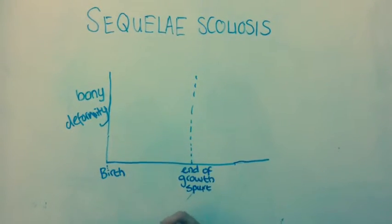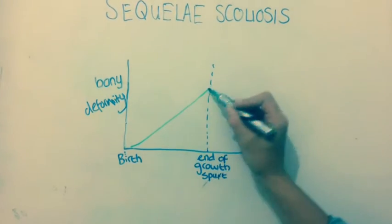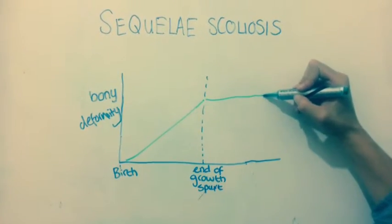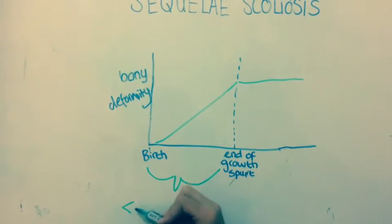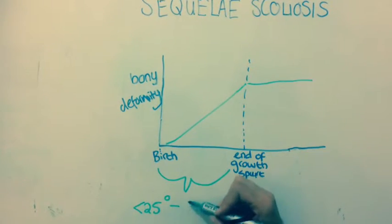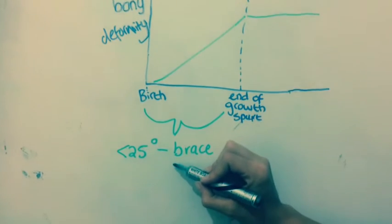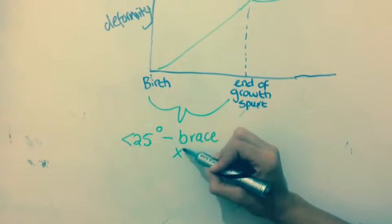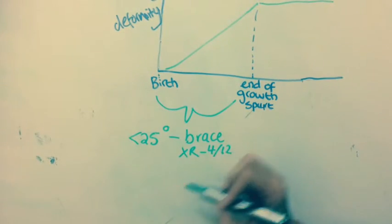Scoliosis progresses rapidly during periods of growth and stops at skeletal maturity. Idiopathic scoliosis in a growing child may be a mild curve, less than 25 degrees. In this scenario, you will X-ray monthly. If there is progression, consider a corrective brace until maturity.